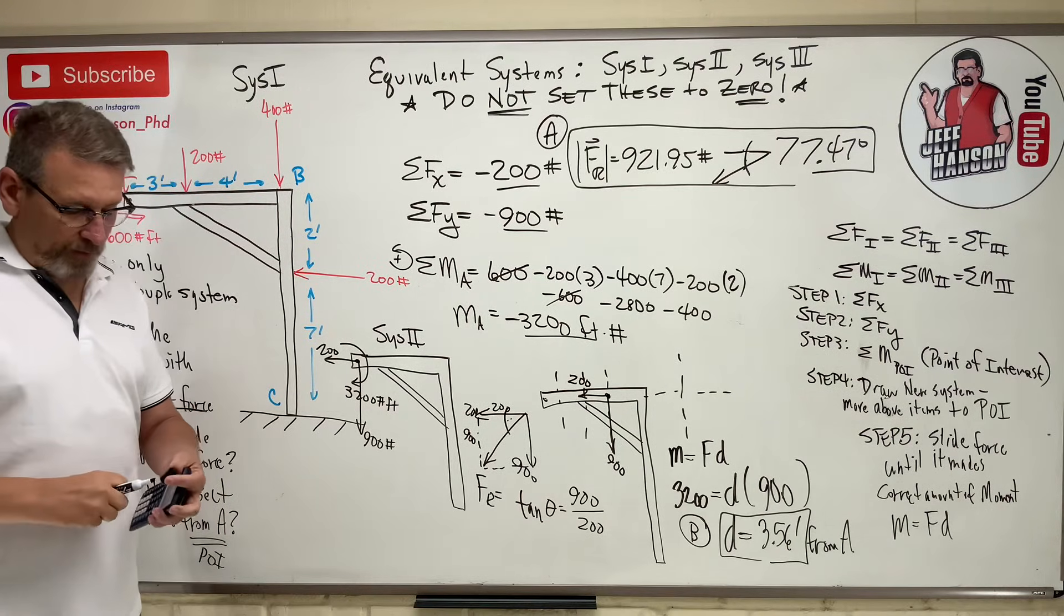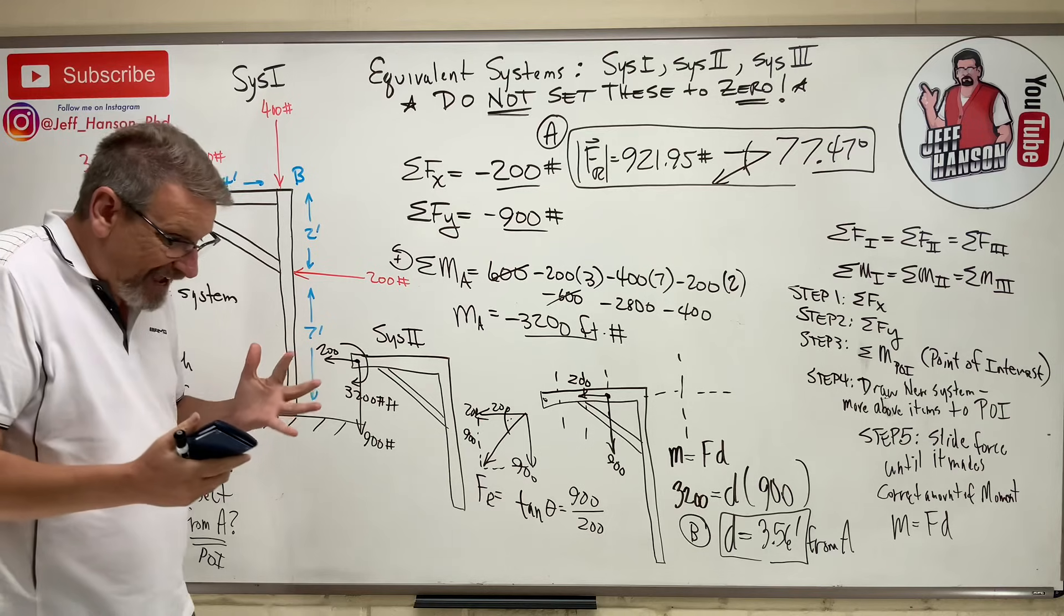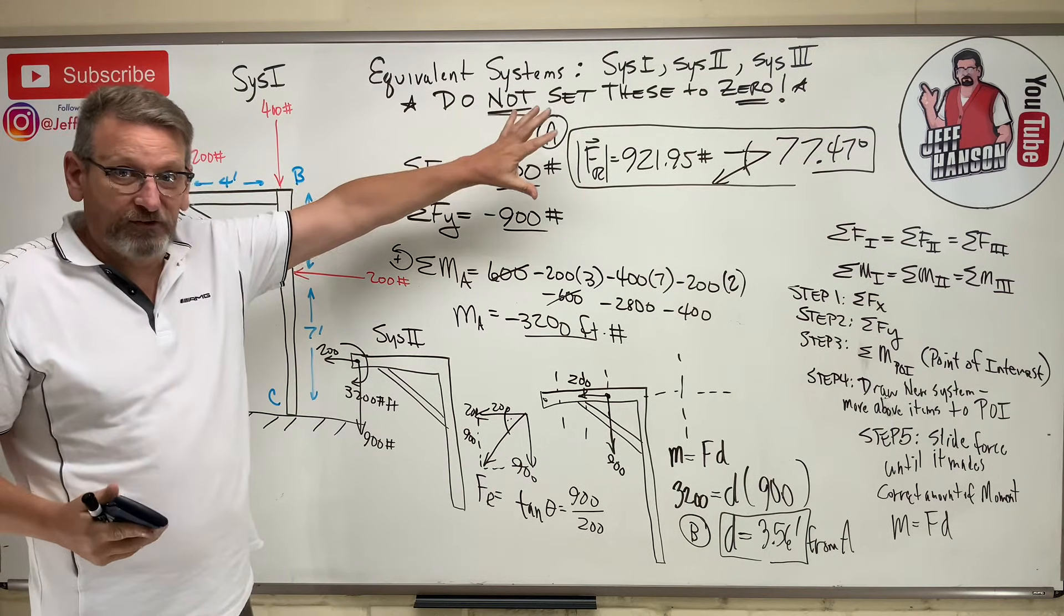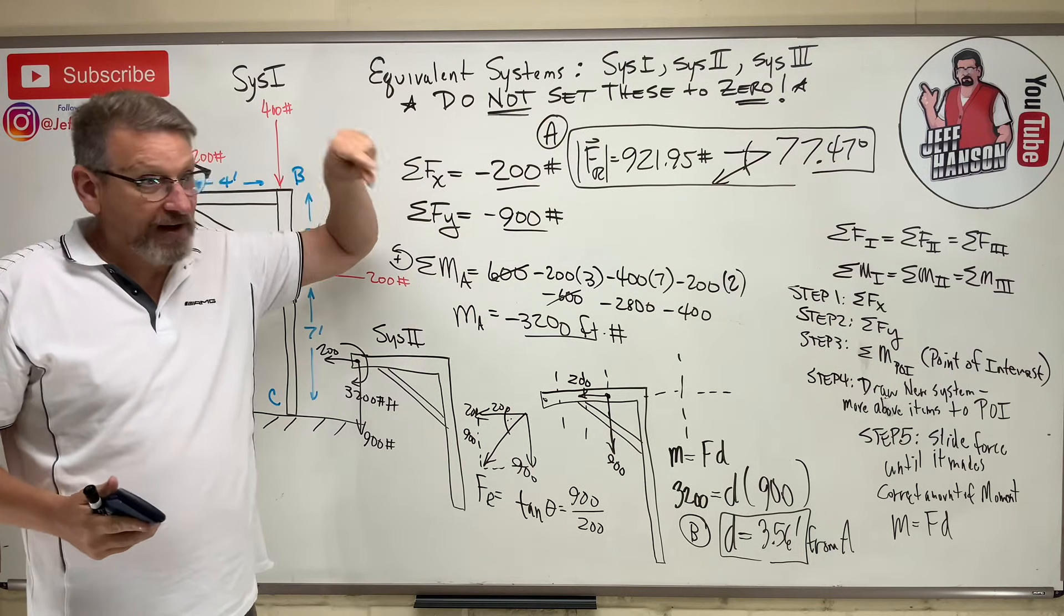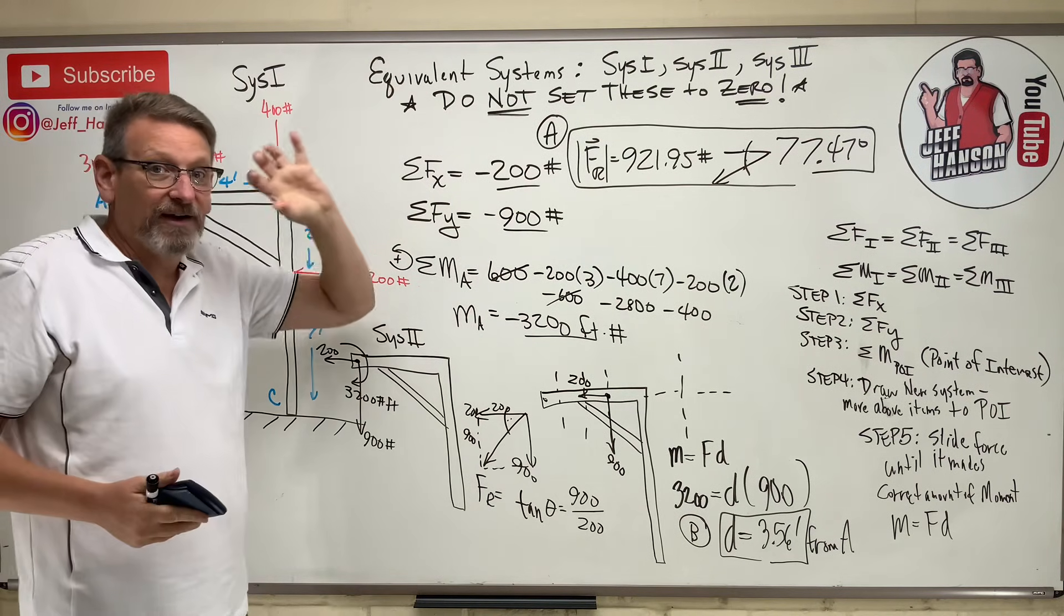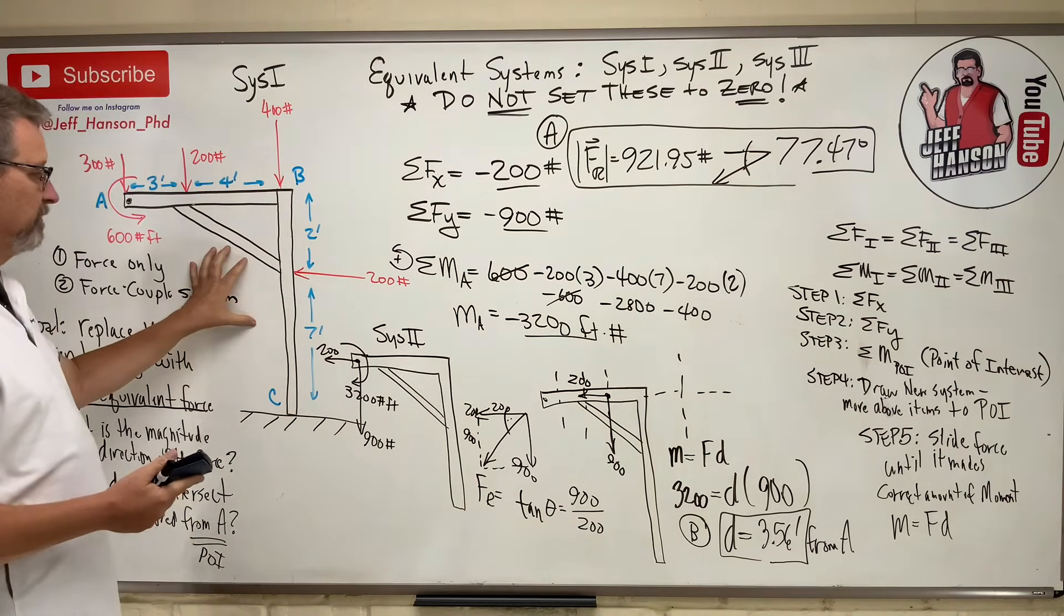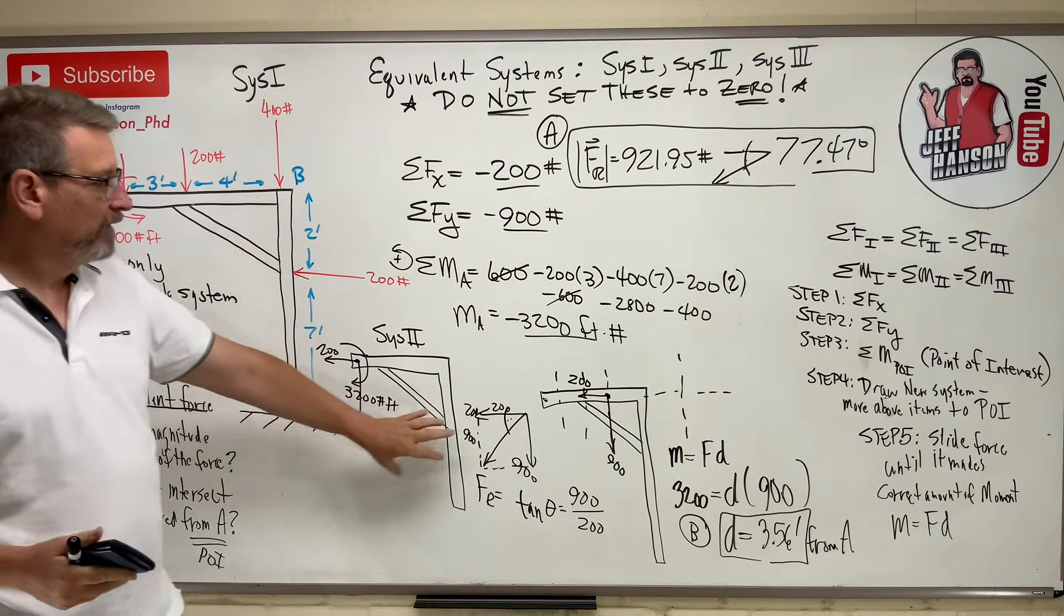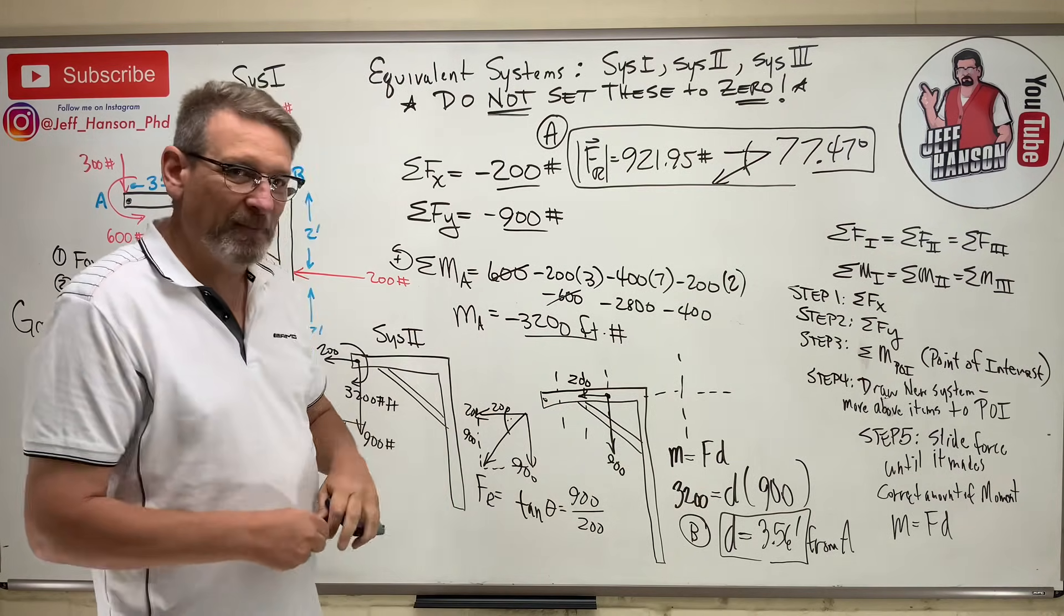These should not be hard problems for you, these equivalent system problems. The hardest part is just when you read the test, you've got to recognize that, oh, that's one of those system one, system two problems. You've got to be able to recognize that kind of problem. And usually, you'll look at the problem, it'll say, find the equivalent or replace the given system with. And we're not solving for anything. We're just taking a system and writing it a simpler way.